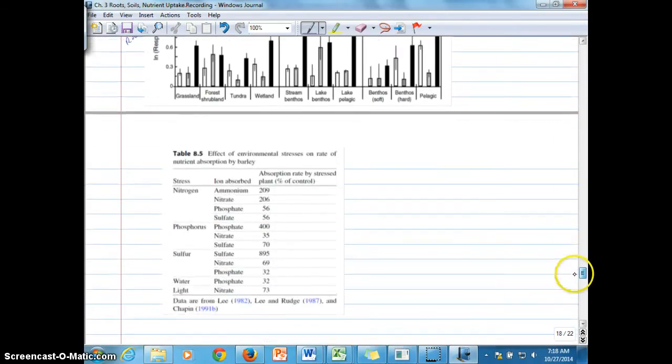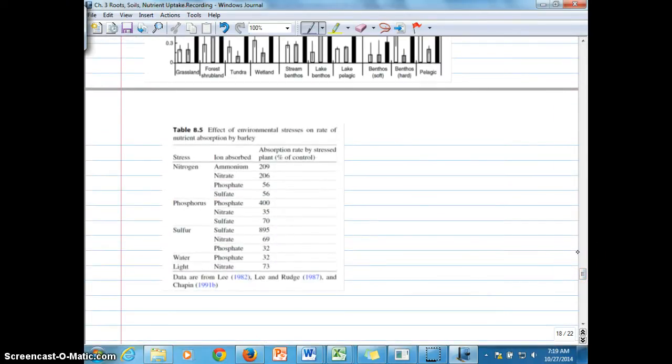All right, so then that brings us to what happens, basically, when there is a nitrogen that's in short supply, how does the plant respond? So we can phrase this as: how does nutrient availability affect differential nutrient uptake? So, for example, in other words, when nitrogen is in short supply, which is indicated as the stress, what happens to the uptake of nitrogen compared to the uptake of other nutrients, in this case phosphate and sulfate.